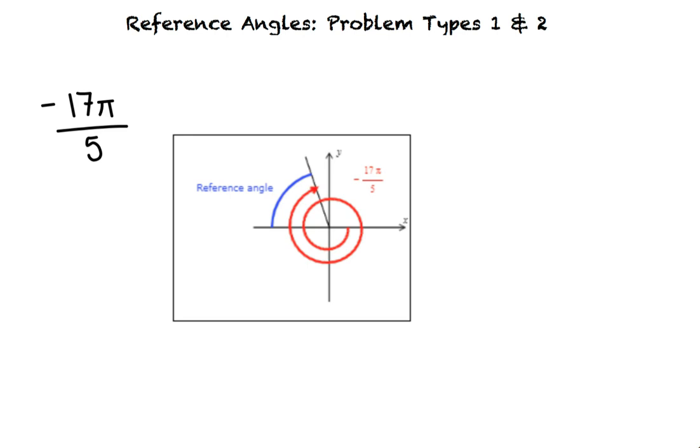Let's find the reference angle for negative 17π over 5. If we consider the angle theta equals negative 17π over 5 in standard position, we see that negative 17π over 5 and 3π over 5 are coterminal.